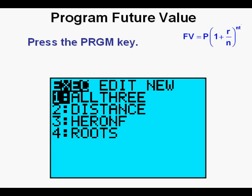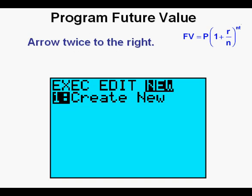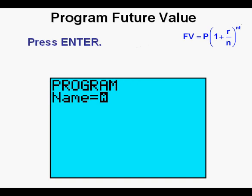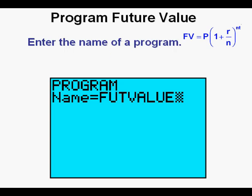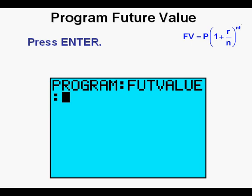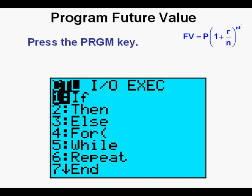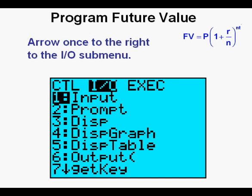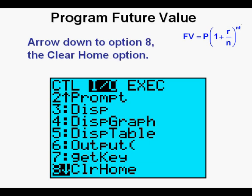We'll now proceed to phase 2 of this presentation: writing the calculator program for the formula for future value. Press the program key between the apps key and the bars key. Arrow twice to the right to the new submenu. Press enter, which accesses the create new option 1. Note the blinking alpha cursor. Enter the name of your program — up to 8 characters in length. I entered FUT VALUE to describe future value. Press enter. Press the program key, arrow once to the right to the input/output submenu, arrow down to option 8, the clear home option. Press enter.